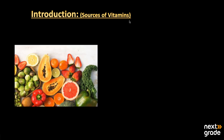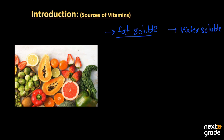The topic we will discuss today is the sources of vitamins — from where we can gain all types of vitamins. As we have already studied, there are two types of vitamins: the first is fat-soluble vitamins, and the second type is water-soluble vitamins. The difference is simple: all vitamins that dissolve in fat are called fat-soluble, and all vitamins that dissolve in water are called water-soluble vitamins.